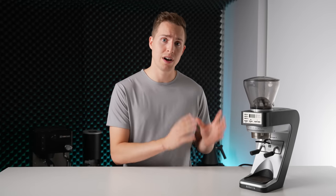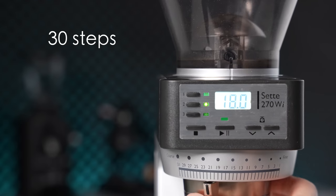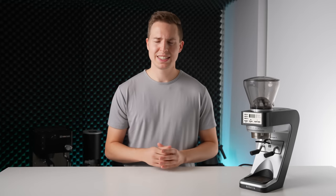However, if you do want to use brew methods that require some more precise control, like espresso, it's really not going to be the best option. With only 30 grind steps spanning the whole range of 230 to 950 microns, that means that each step is about a 24 micron jump. And while this might sound quite small, it's still a little bit too large to truly dial in espresso.